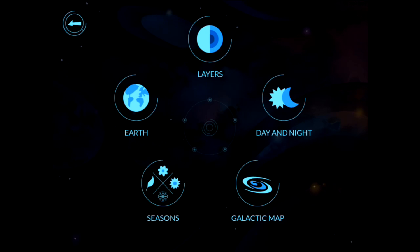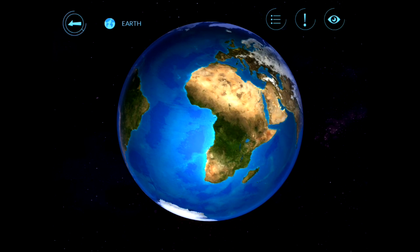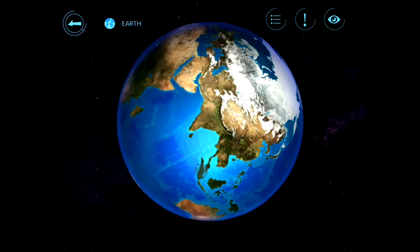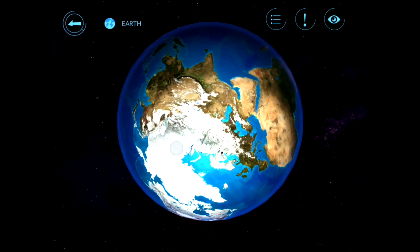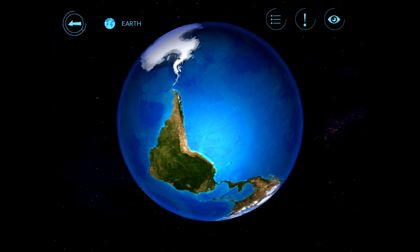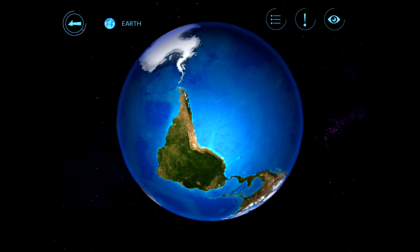So, this is the Earth itself, and this is to further demonstrate the drag and move-around concept of Arloon Solar System. You can see here, you can freely rotate the Earth as you want.